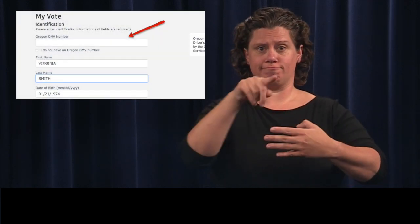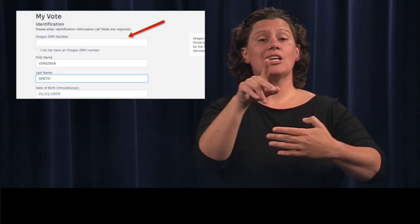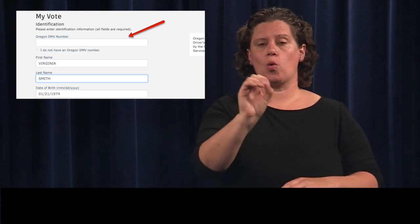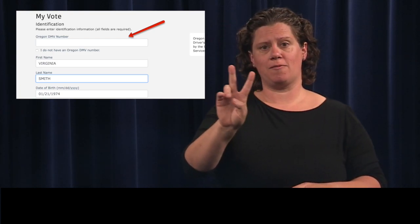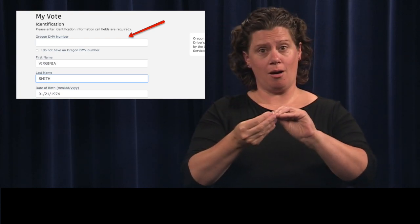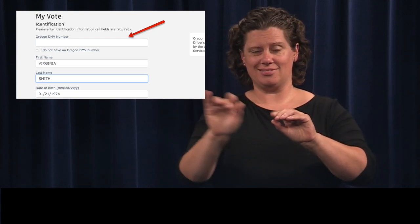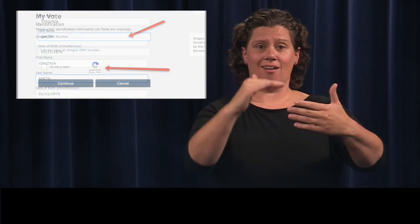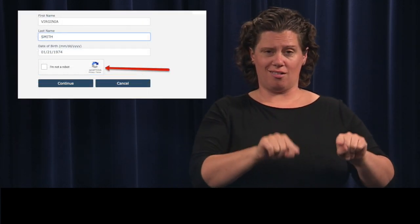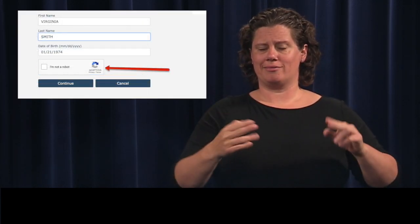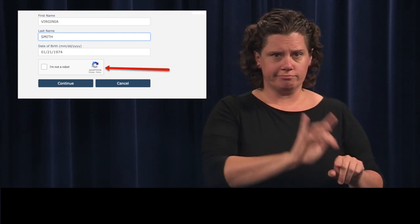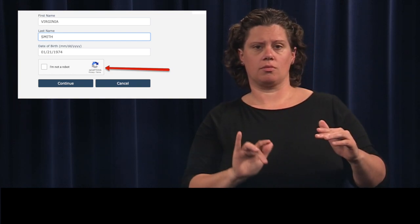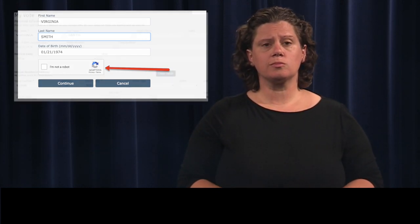Then click the button Continue. Your name and birthday will appear. You will provide your Oregon DMV number in the space provided. Click the box next to I'm not a robot and then Continue to move to the next screen.